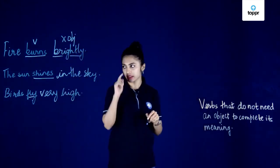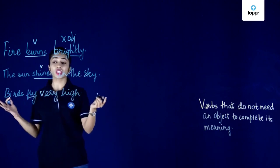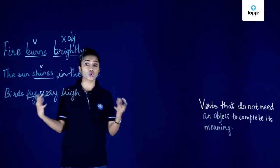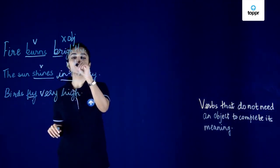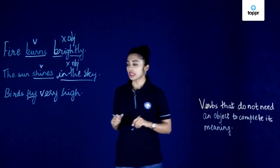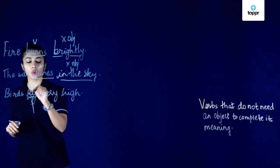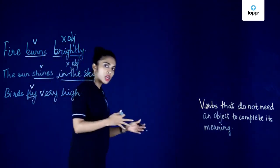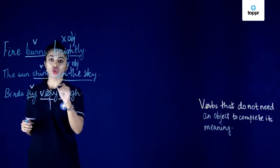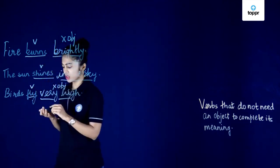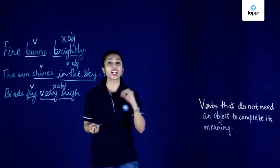Let's look at the second sentence: 'The sun shines in the sky.' Verb is 'shines.' The sun shines what? The sun shines whom? No answer — so 'in the sky' is not our object but simply a prepositional phrase. Third sentence: 'Birds fly very high.' 'Fly' is our verb. The birds fly what? The birds fly whom? No answer. So these verbs — burns, shines, and fly — are our intransitive verbs.